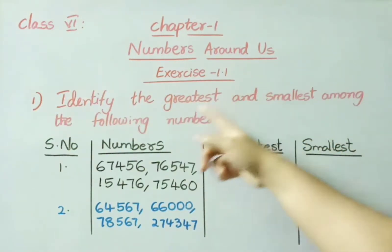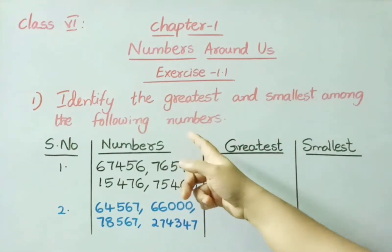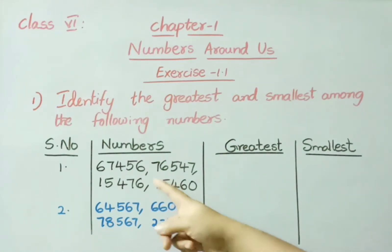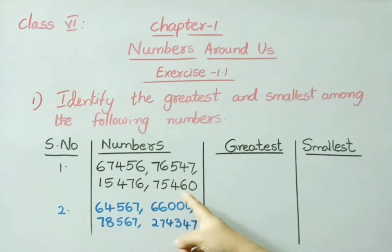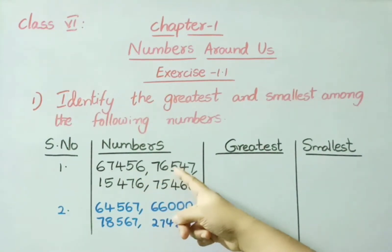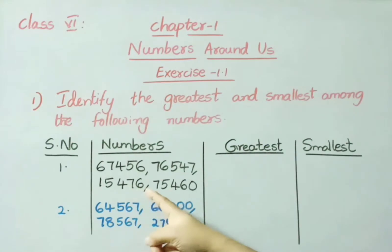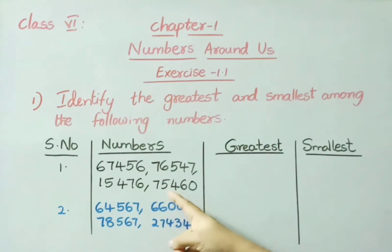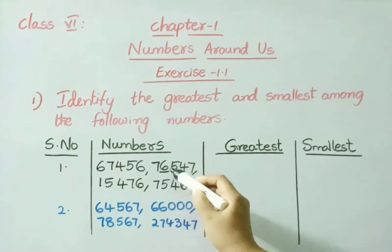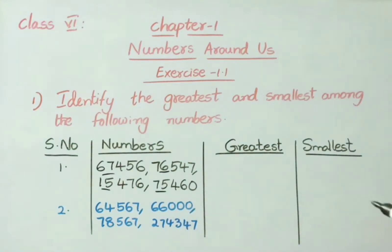Exercise 1.1, First Sum: identify the greatest and smallest among the following numbers. See the first one — here 4 numbers they have given. All the 4 numbers are 5-digit numbers: 67,456; 76,547; 15,476 and 75,460. If we observe the first 2 digits of each number, we can identify the greatest and smallest.